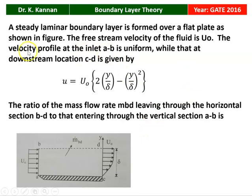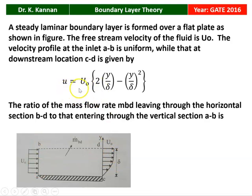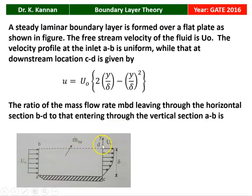The next question is from the 2016 question paper. A steady laminar boundary layer is formed over a flat plate as shown in the figure. The free stream velocity of the fluid is U₀. The velocity profile at section AB is uniform, while at the downstream section CD the velocity profile is given by U = U₀ times (2Y/delta − (Y/delta)²). The question asks for the ratio of mass flow rate MBD leaving through horizontal section BD to that entering through vertical section AB.